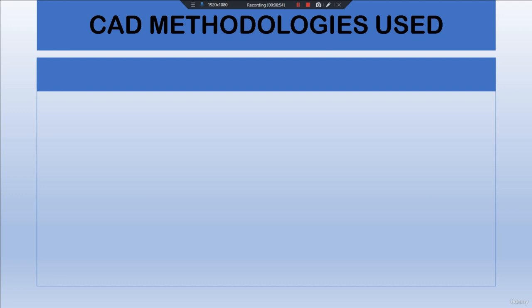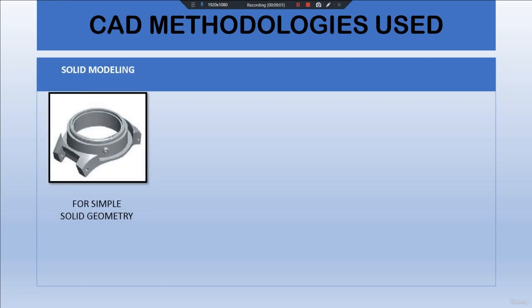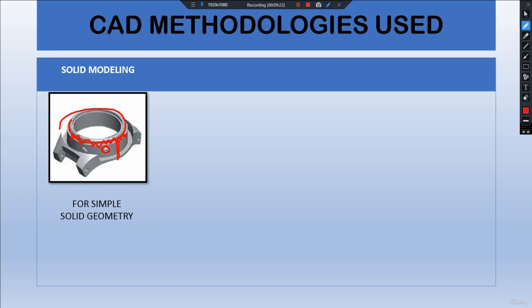Now we will see what modeling methodologies are used in CAD. The first one is solid modeling. Looking at an example, we can identify a cylinder, a cone or cylinder beside it, a flat plane, and an extruded feature. Solid modeling is used to produce simple solid geometry. This can be done using measuring tools such as calipers or verniers, or by scanning the data and then modeling it using CAD software.